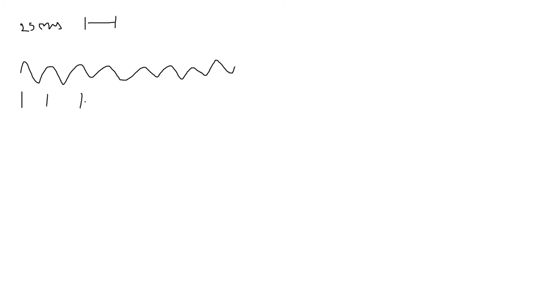Now that we've explained why CTC is useful, let's see how it computes its loss function. We take the example of building a speech recognition system. What you have is an audio file, and you window it with a window size of 20 milliseconds. Let's say we want the model to learn that this audio has the transcription 'hello'.